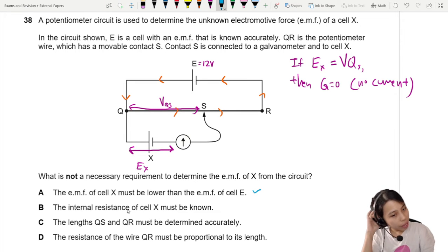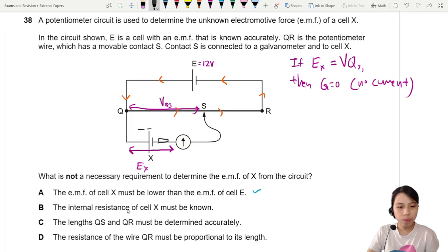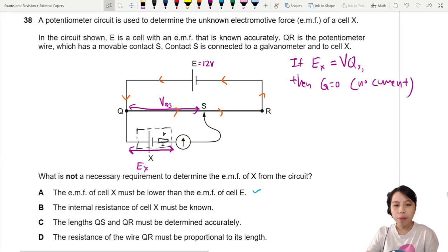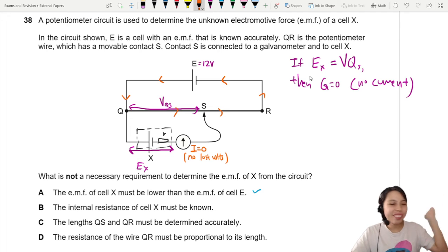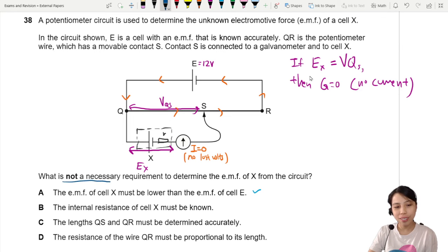B says the internal resistance of cell X must be known. Interesting. What if this one got internal resistance? Do we need to know it? Actually, it would affect certain potential difference. But if there's already no current for how these potentiometers need to work, if there is no current, then it wouldn't matter if there's internal resistance or not because there will be no lost volts. So we don't really need this. Not a necessary requirement. I think I would go with B, but let's check the rest also.